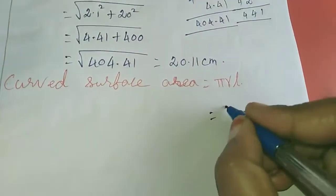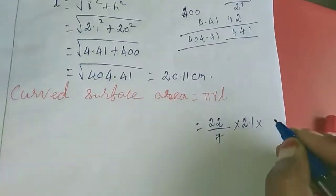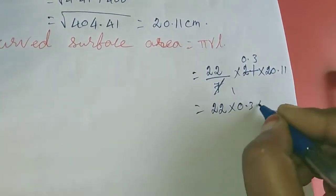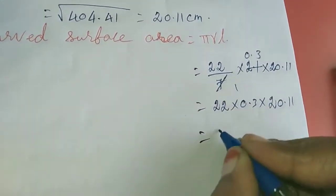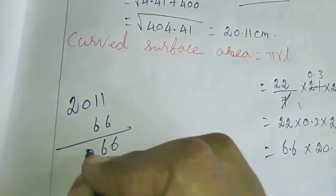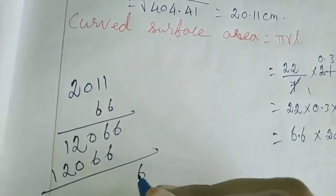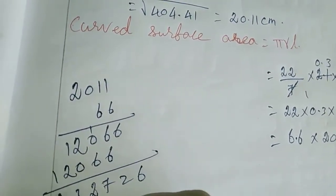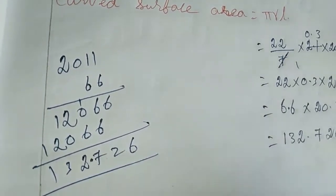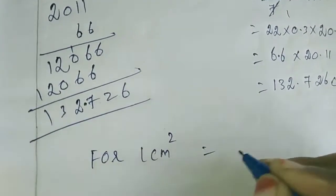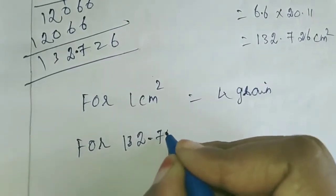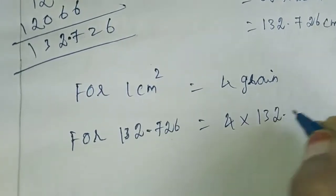Now I am going to find the curved surface area: 22 by 7 into 2.1, l value is 20.11. After simplification the curved surface area comes to 132.726 cm². For 1 cm² we have 4 grains, so for 132.726 cm² we calculate 4 into 132.726.